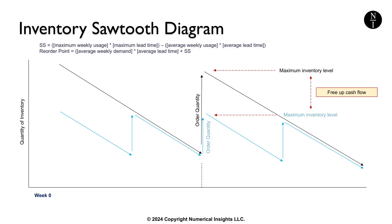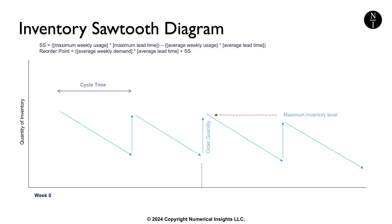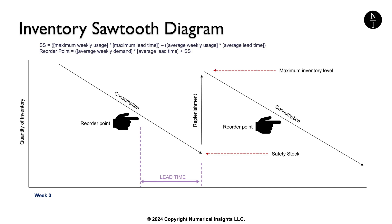Let's look at three more metrics that are on this chart. Cycle time: this is the time interval between successive replenishments measured along the x-axis. Lead time: this is the delay between placing an order and receiving it, represented by the gap before the inventory spike after reaching the reorder point. Safety stock: this is a buffer stock level maintained to avoid stock outs during unexpected demand or delays. This is a value which can be calculated.